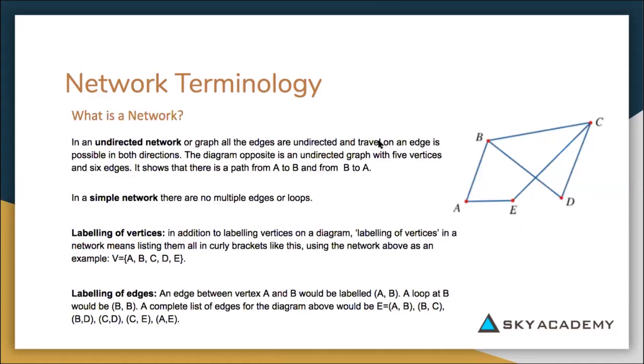An undirected network just means that there's no direction set to it, so you could travel both ways. You can go from A to B or B to A.